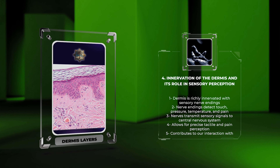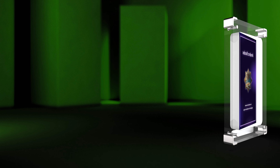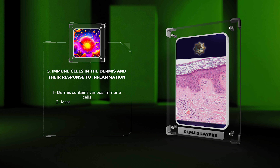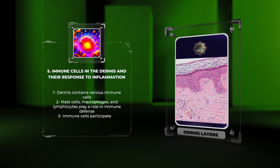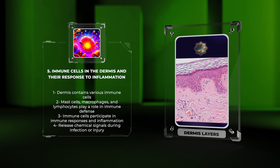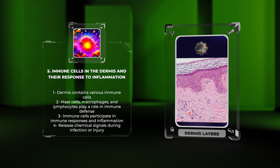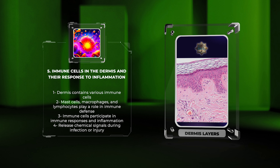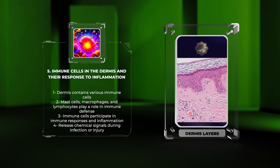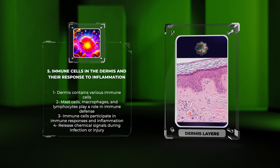The dermis harbors various types of immune cells such as mast cells, macrophages, and lymphocytes, forming an important part of the skin's immune defense system. These immune cells actively participate in immune responses, particularly during inflammation.